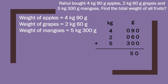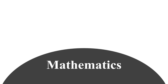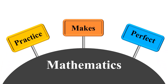0, 9 plus 6 is 15 — write 5, carry 1. 3 plus 1 is 4, and 4 plus 2 is 6, 6 plus 5 is 11. So our answer: total weight of fruits equals 11 kilogram 450 gram. In mathematics, practice makes perfect, so do practice.